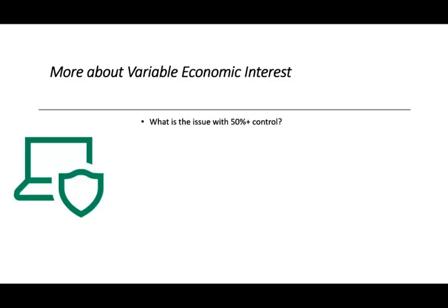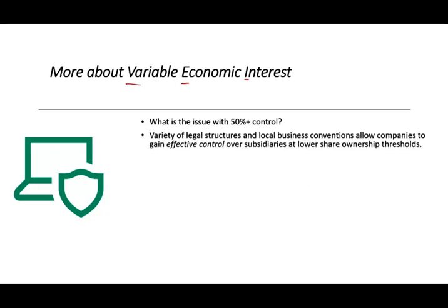Sometimes the connection is direct — they have direct shares; sometimes it's indirect, where they own an intermediate entity that owns the subsidiary. There are also situations where legal structures allow companies to gain effective control at lower share ownership thresholds. Let's talk about Enron briefly to show why we emphasize control and variable economic interest in consolidation.